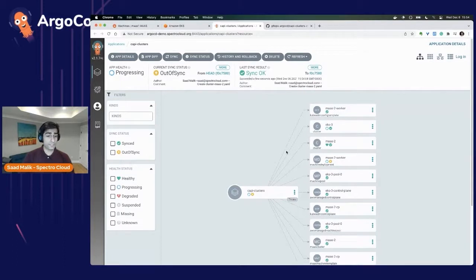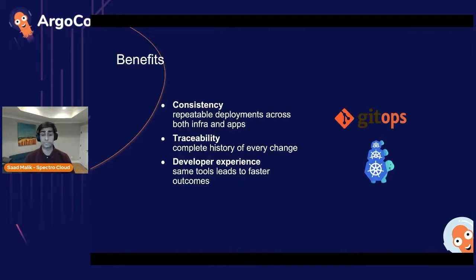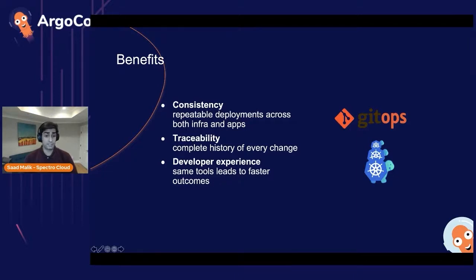Cluster API makes it very easy to not only provision, but manage the end-to-end lifecycle of your clusters. The benefits of managing infrastructure via GitOps are the same as managing applications via GitOps: Git becomes a self-documenting repository giving you complete traceability into operations performed — who, what, when. It's super easy to recover; if something is misconfigured, just revert to the previous commit and GitOps will revert the cluster to the previous state. You can also enforce advanced workflows around who is allowed to make operational changes, using GitHub or GitLab processes. And because it relies on Argo CD and YAML-based specifications, it works identically to how you manage your applications.